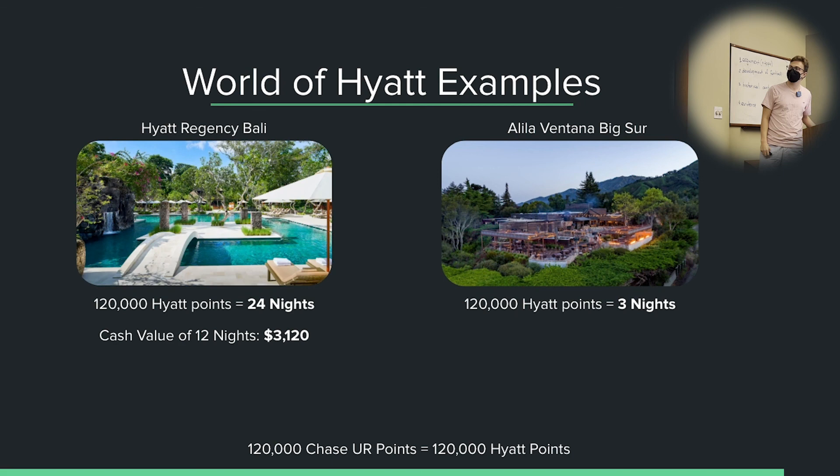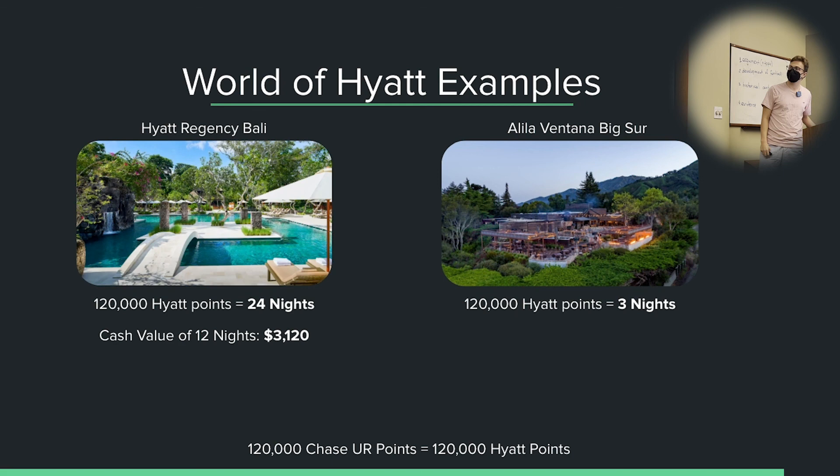If I had 120,000 Hyatt points, I would have 24 nights at the Hyatt Regency in Bali — all from me and a player two signing up for two suboptimal bonus cards. The cash price of that would be about $3,100. For Alila Ventana Big Sur, you would get three nights, with a cash price of about $6,000 if you were actually paying cash.